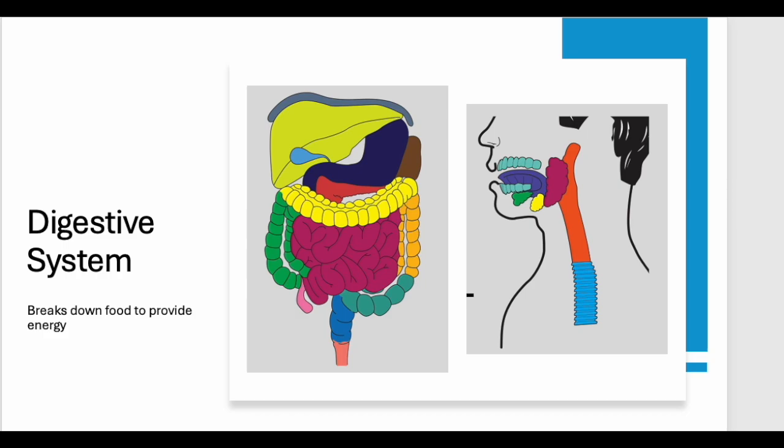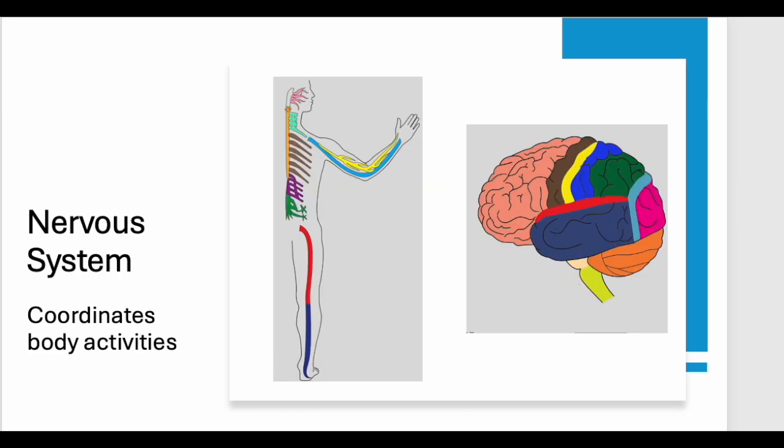Coordinating all these amazing activities is the nervous system. Think of it as the body's control center and communication network. The brain is the main computer. The spinal cord is the main highway. And, nerves are like the wires that carry messages throughout the body, allowing us to think, feel, and react.